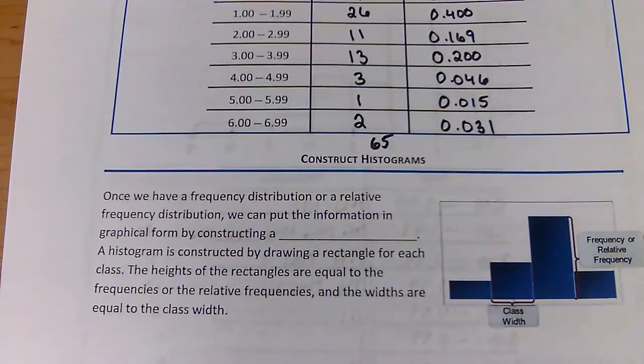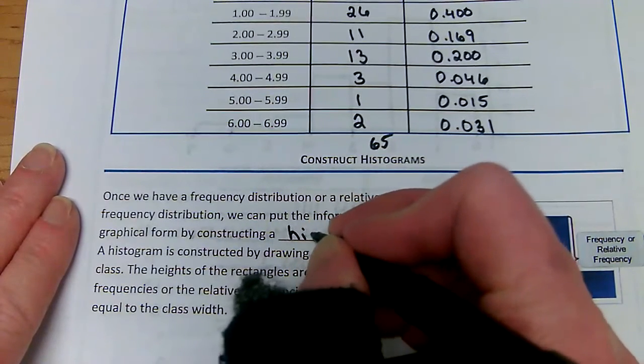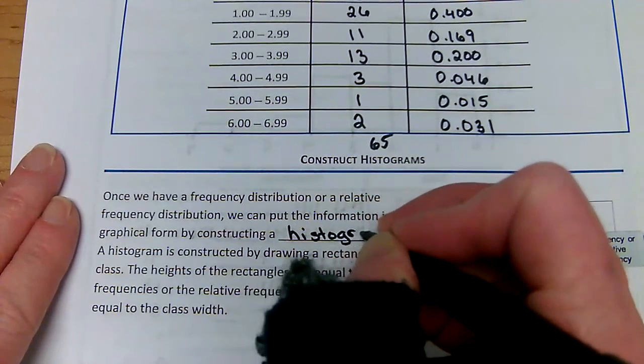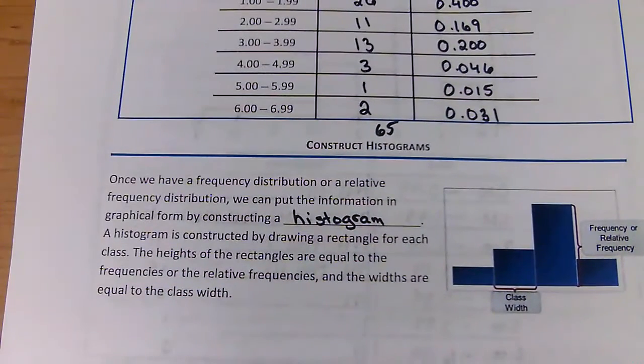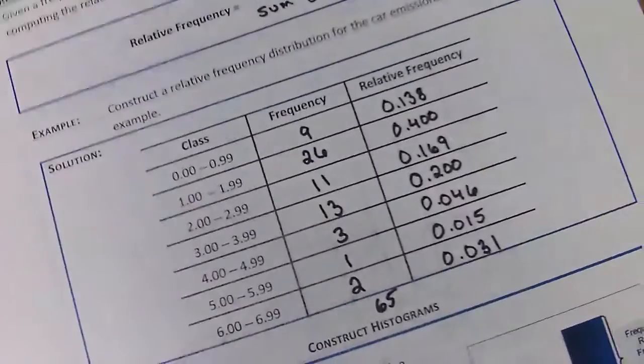These are called histograms instead of a bar graph. A bar graph is used with qualitative data really, and a histogram is quantitative data. When we're putting our quantitative data in we make a histogram. We make rectangles where the height is the frequency, the width is the class width, and notice that these are touching because we have no gaps between our classes.